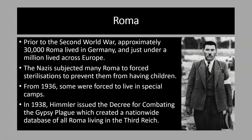Gypsies was the name used by the Nazis for the Roma people. There were about 26,000 gypsies in Germany in the early 1930s. The Nazis believed that gypsies did not work enough or contribute enough taxes because of their nomadic lifestyle, and that they posed a threat to the racial purity of Germany. From 1936, some gypsies were forced to live in special camps. For example, one camp in Berlin housing 600 gypsies had just two latrines — not even proper toilets — three water taps, and no electricity.